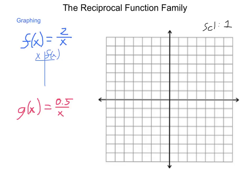What happens if we put in 1? We get 2 divided by 1, which is 2. If we put in 2, we get 2 divided by 2, which is 1. If we put in 4, we get 2 divided by 4, which is one-half. Notice that the products are always coming out to be equal. If we put in one-half, 2 divided by one-half doubles the number and gives us 4, and you start to see the trend of the line.